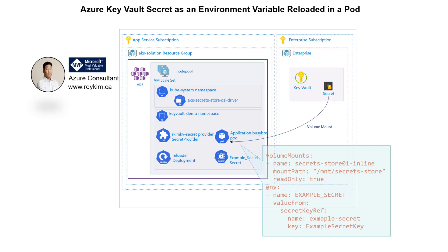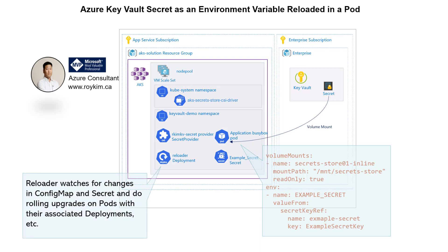What we need is the open source tool called Reloader. What it does is watch for changes in a config map or a secret, and perform rolling upgrades to the pods that are associated with Kubernetes deployments — it can also work for stateful sets.